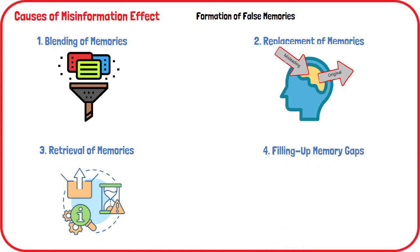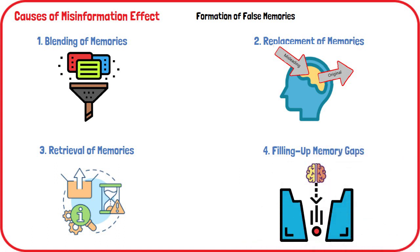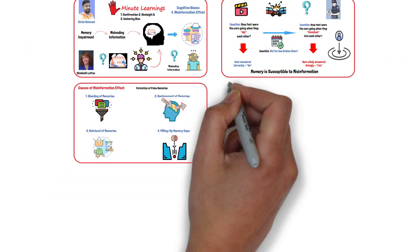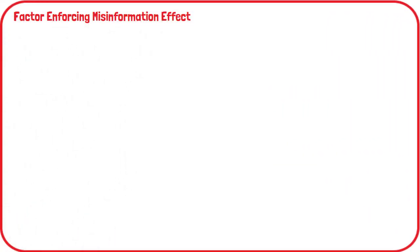Filling of memory gaps: in some cases, the pertinent data from the original event may never have been encoded into memory in the first place. So when misleading information is presented, it is incorporated into the mental narrative to fill in these gaps in memory. Research has shown that there are several factors that can contribute to the misinformation effect, making it more likely that event happenings will be distorted and lead to false memories.